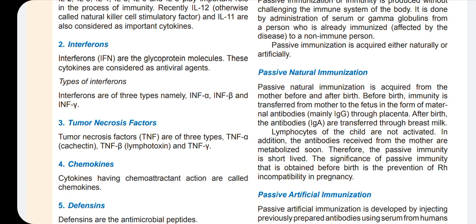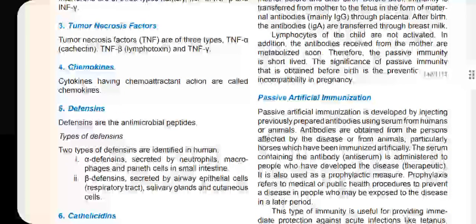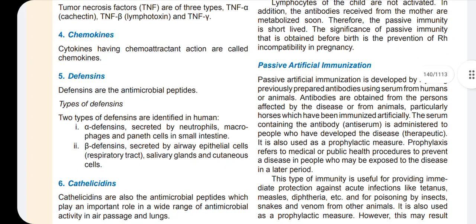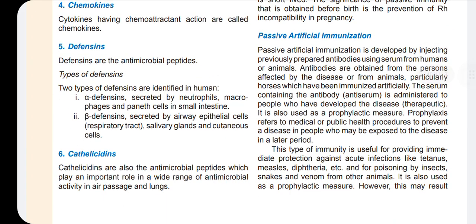We consider immunity received from the mother as passive natural immunization. Next is passive artificial immunization. If an immunity substance is injected by getting serums from humans or animals, wherever we have that immunity, it is called passive artificial immunization.